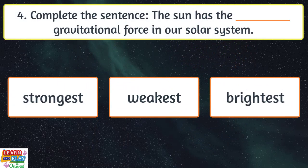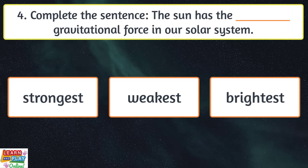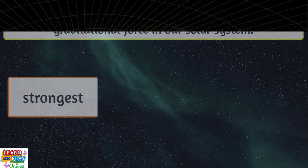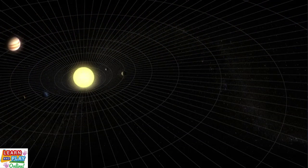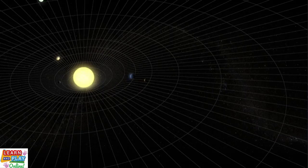Question four. Complete the sentence. The sun has the strongest gravitational force in our solar system. Being the largest object at the center of our solar system, this gives the sun the trophy for having the strongest gravitational force.